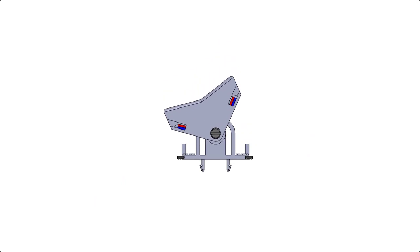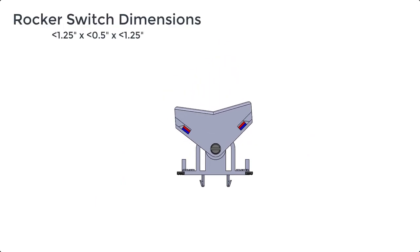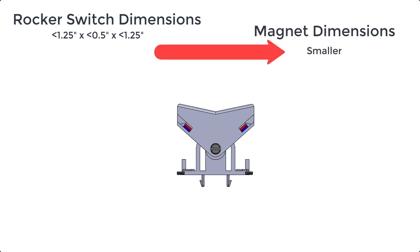The moving piece, the rocker of our electromechanical switch, will be where our magnet is housed and we can expect the magnet will be some fraction of the size of this rocker.